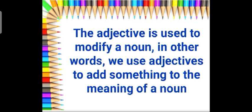You all know that the adjective is used to modify a noun. And a noun is a name of a person, place, animal, or thing, or an idea also. In other words, we use adjectives to add something to the meaning of a noun. Adjectives are also known as describing words.